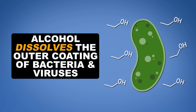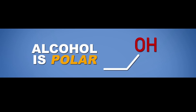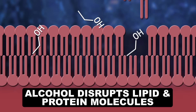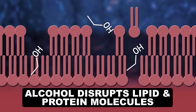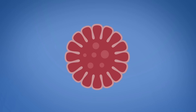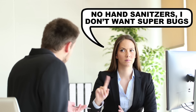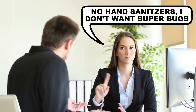They work by dissolving the outer coats of bacteria and viruses and basically exploding them. Alcohol is polar, with water-loving hydroxyl groups, and it loves to disrupt the protein and lipid molecules that make up both bacterial membranes and viral envelopes. When those all-important outer coats fall apart, these disease-causing culprits literally spill their guts, leaving them in no position to make anyone sick.